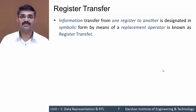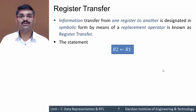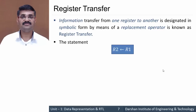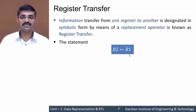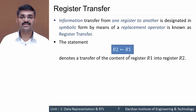Information transfer from one register to another is designated in symbolic form. For example, R2 ← R1 means the content of register R1 is transferred into register R2. This arrow is called the replacement operator. The previous content of R2 would be overwritten by the content of R1, but the content of R1 itself remains unchanged.